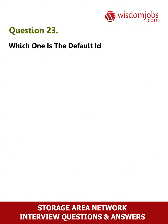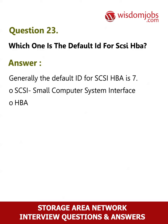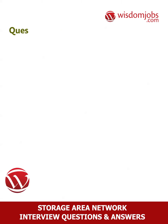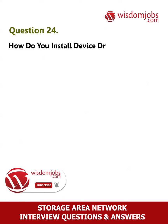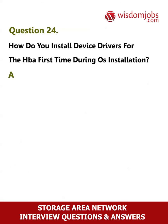Question 23: Which one is the default ID for SCSI HBA? Answer: Generally, the default ID for SCSI HBA is 7. SCSI stands for Small Computer System Interface and HBA stands for Host Bus Adapter.